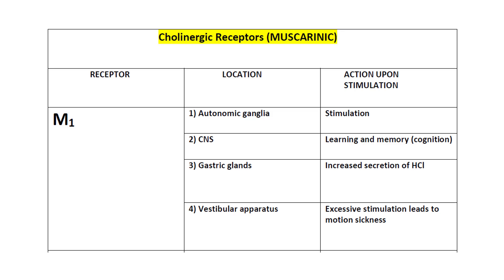M1 receptors are present in the autonomic ganglia, where they promote the delivery of impulses. In the central nervous system, stimulation of M1 receptors results in increased learning and memory. In the gastric glands, stimulation of M1 receptors causes increased secretion of HCl. And in the vestibular apparatus, overstimulation of M1 receptors leads to motion sickness.